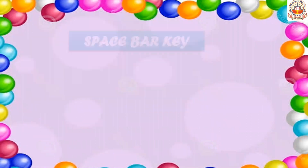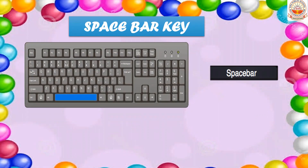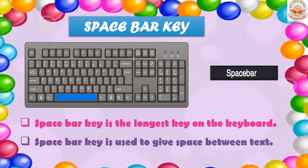The next special key is the space bar key. You can easily identify it — the longest key on the keyboard is the space bar key. It is used to give space between text, that is, between words or numbers. If there is no gap between words it will be difficult to read, so you use the space bar key to give gaps.